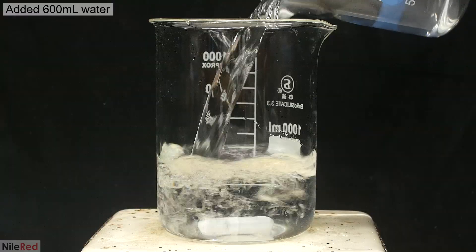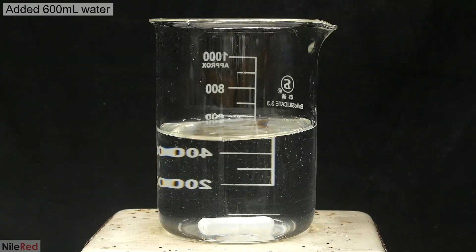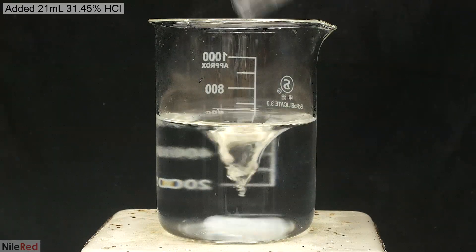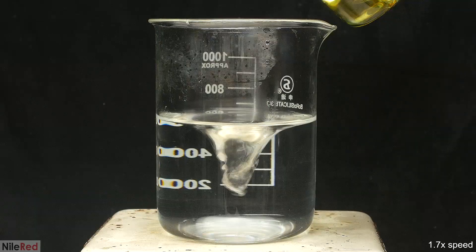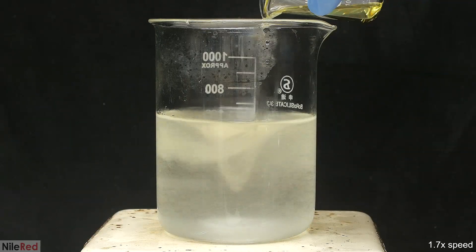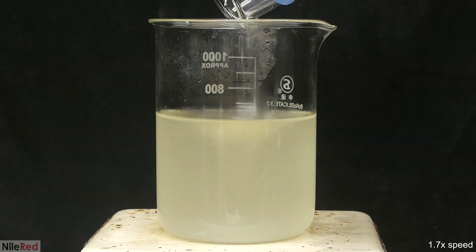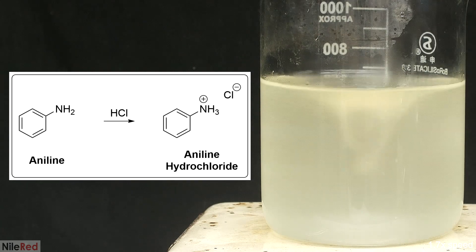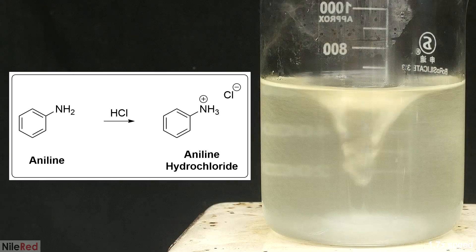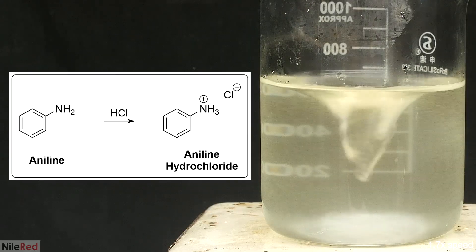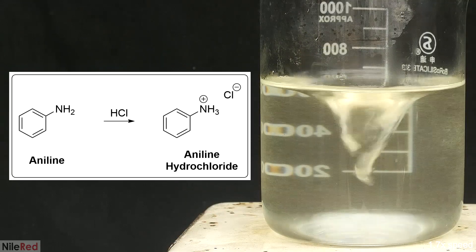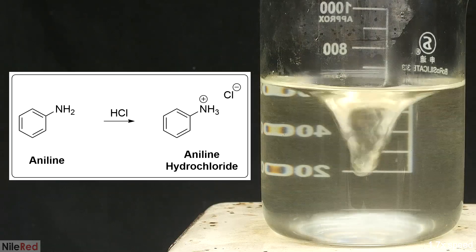Then, into another beaker, I add some distilled water. I turn on the stirring, and I slowly pour in some hydrochloric acid. Once all of the acid is added, I can start to pour in the aniline. Under normal conditions, aniline is insoluble in water. In this case though, the water is acidic, and aniline is a base, so it's going to undergo an acid-base reaction. This leads to the formation of aniline hydrochloride, which is a salt, and soluble in water. So I just continue stirring, and wait for all of the aniline to react.